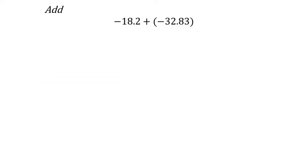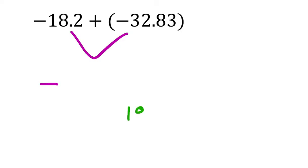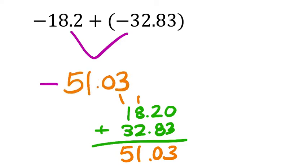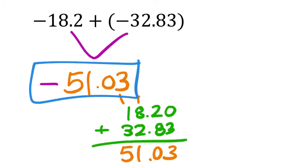For this addition problem: both numbers are negative, so the answer is negative. Take 18.2 and add 32.83. Line up the values — 18.2 can have a 0 in the hundredths place. 0 plus 3 is 3; 2 plus 8 is 10, carry the 1; 1 plus 8 is 9, plus 2 is 11, carry the 1; 1 plus 1 is 2, plus 3 is 5. That's negative 51.03. The calculator confirms exactly what we got.